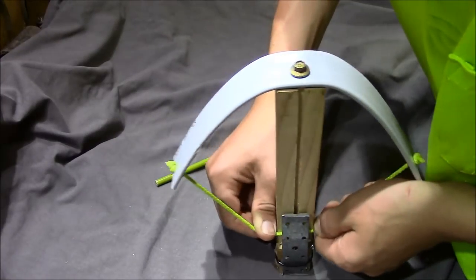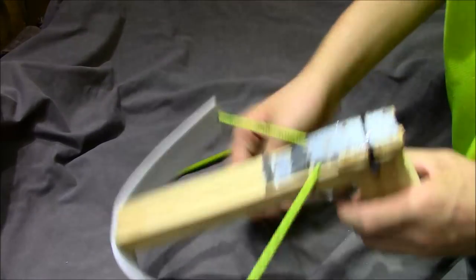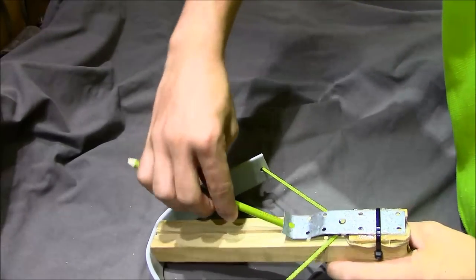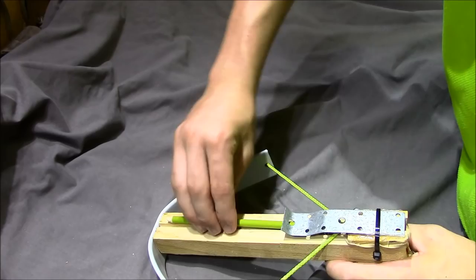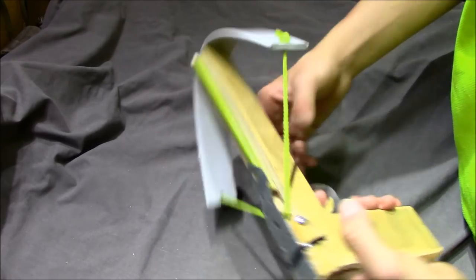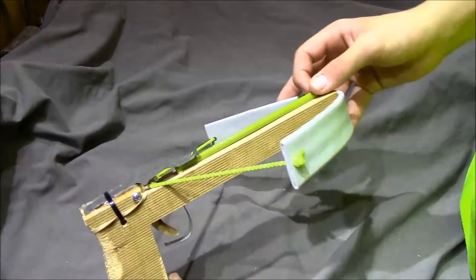For loading it just pull the string down until it engages with the trigger mechanism. Simply put your pencil underneath the arrow clasp that should hold it down so that it doesn't fall out and now it's ready to fire.